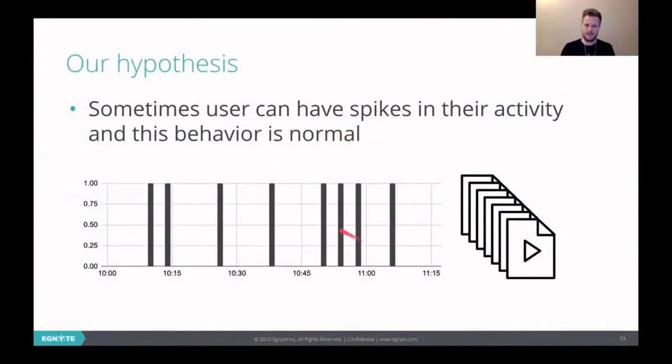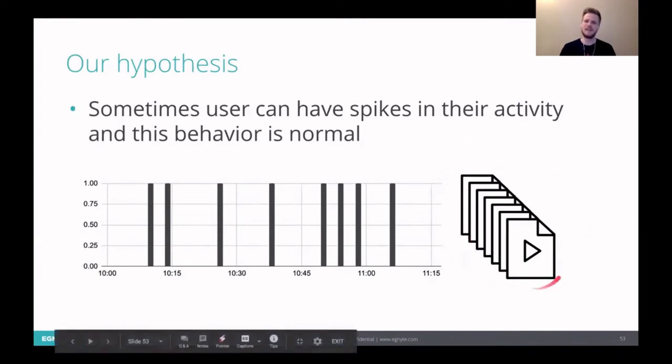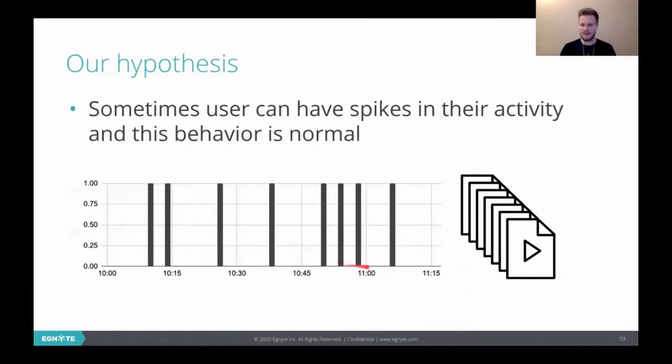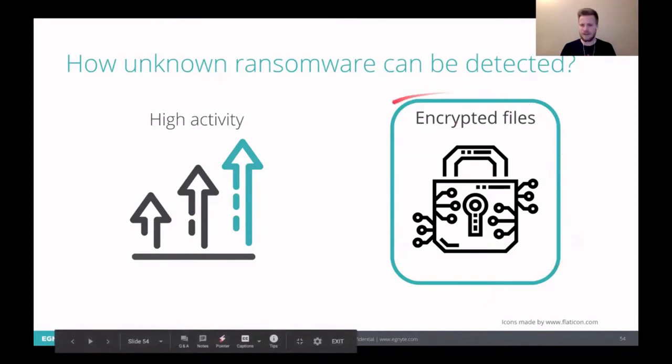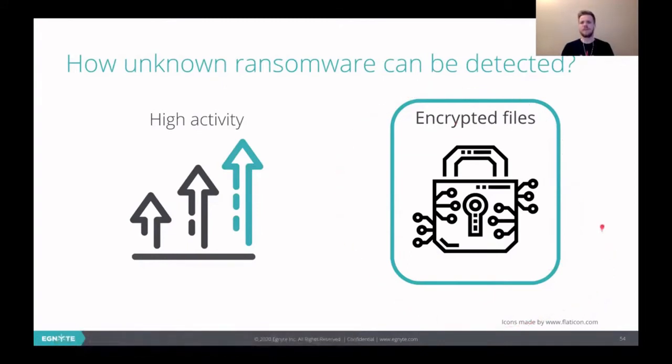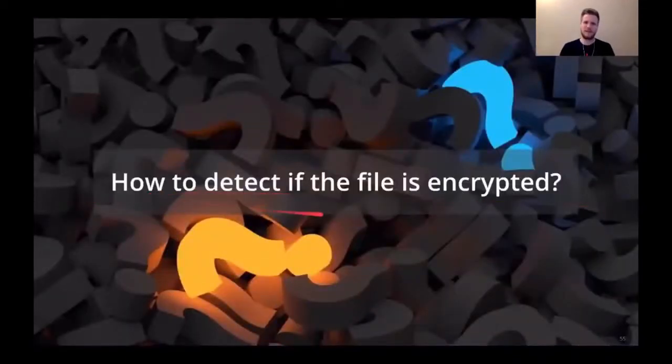So how to reduce the number of false positives even more? Remember our hypothesis that sometimes user can have spikes in their activity and that's totally okay? So maybe they can have longer spikes. For example, maybe when they are renaming massively all their media files, it can take some longer time. And it's a longer time with quite high user activity, a lot of file moves, a lot of renames. So maybe that's why our model predicts it as attacks. And even after smoothing, it's taking longer than 10 minutes at all. So maybe we need to focus on this if the user files are getting encrypted. So how to detect if the file is encrypted?